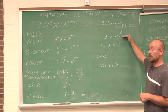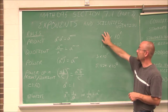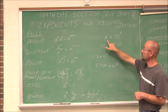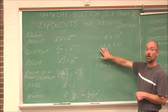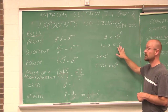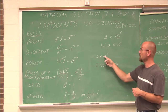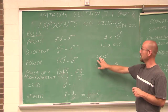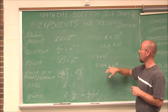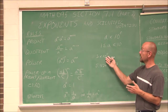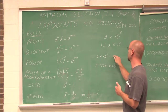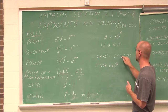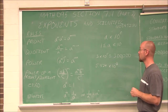A number in scientific notation is written as a times 10 to some power r, where a is greater than or equal to 1 but less than 10. For example, 3 times 10 to the fifth — 3 is between 1 and 10. Written in standard form, that would be 3 with five zeros, which is 300,000 — a relatively large number.